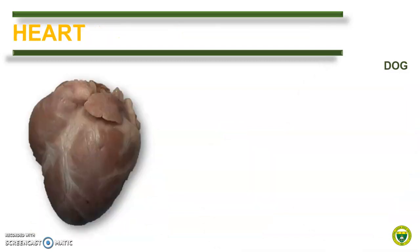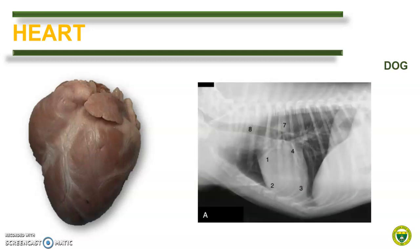Let us first study the heart of a dog. It is generally described to be ovoid in shape and roughly contributes about 0.7% of the body weight of the dog. In contrast to other animals, the heart of a dog has a blunt apex. From a clinical point of view, it is clearly important to know the relationship of the parts of the heart to external landmarks. In dogs, the heart extends from the third to the seventh rib. Please note that different references may show different information, but variation may also exist depending on the breed of the dog.